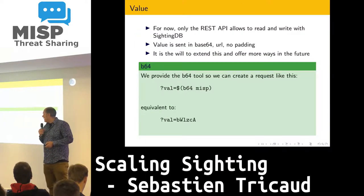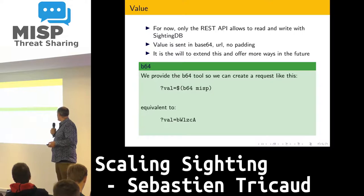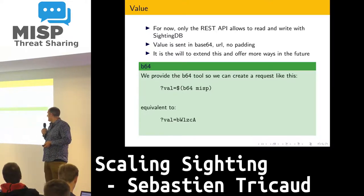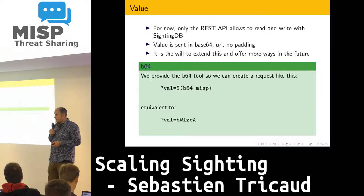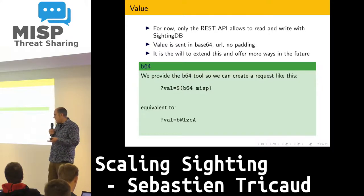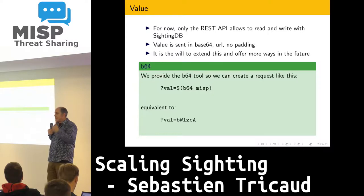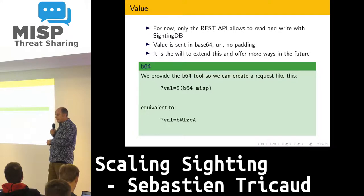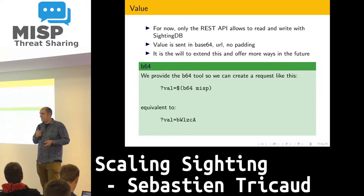As for the value, there is a REST API that allows you to read and write on SightingDB. The value is sent in base64 URL with no padding. We can offer many more ways in the future, but for now that's what works in the database. We provide a tool called b64 that encodes this way, so you can give into the URL. For example, if I want to store 'misp' as the value, it translates into base64 URL no-padding.